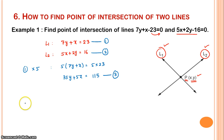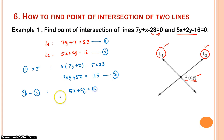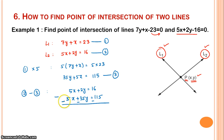Now we compute equation 2 minus equation 3. Equation 2 is 5x plus 2y equals 16, minus equation 3 which is 5x plus 35y equals 115. We subtract: 5x minus 5x cancels out. Then 2y minus 35y gives minus 33y.